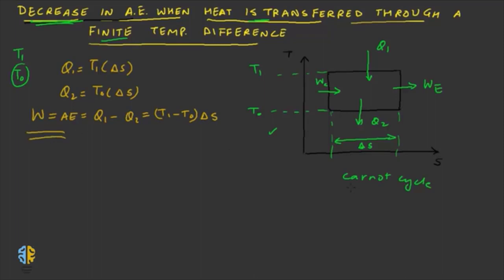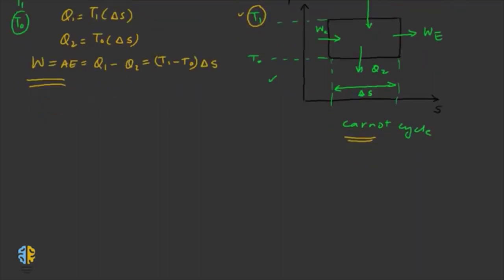This is the case for an ideal or Carnot cycle. Now let us assume that Q1 is transferred through a finite temperature difference from the reservoir at T1 to the engine which is absorbing heat at T1 dash. We are changing the scenario here: the temperature of the reservoir is T1, but the temperature at which the engine absorbs heat is reduced to T1 dash, and we are assuming T1 is greater than T1 dash.